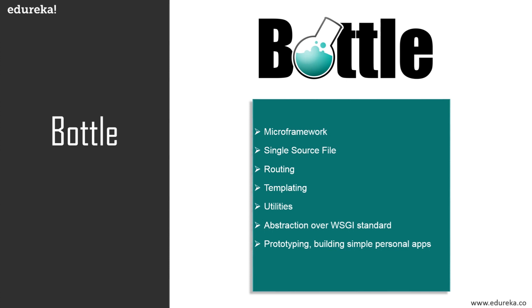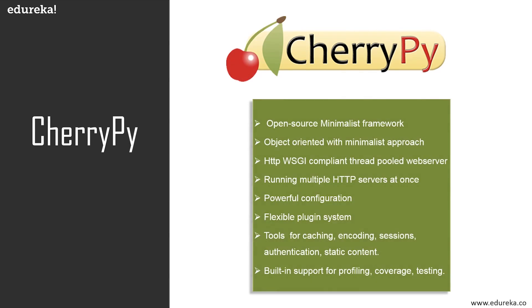The next framework is CherryPy, an open source minimalist web framework. It makes building Python web applications no different from building any other object-oriented program, allowing any type of technology for templating and data access. It can still handle sessions, cookies, file uploads, and everything else a web framework typically can. Its features include an HTTP-compliant WSGI thread pool web server, the ability to run multiple HTTP servers at once, a powerful configuration system, a flexible plugin system, out-of-the-box tools for caching, sessions, authentication, and static content, built-in support for profiling, coverage, and testing, and the ability to run on different platforms.